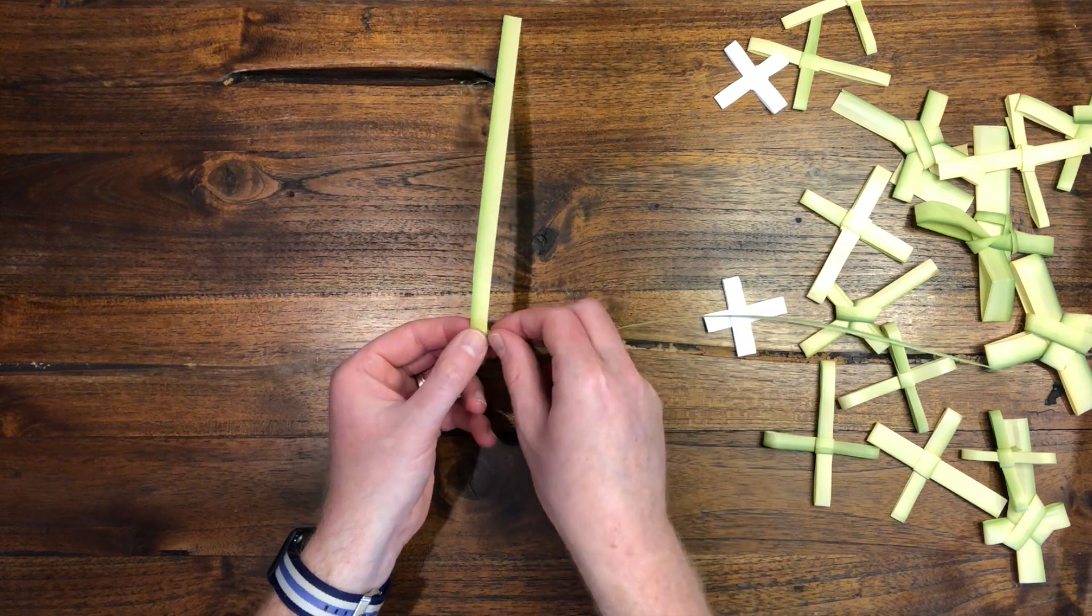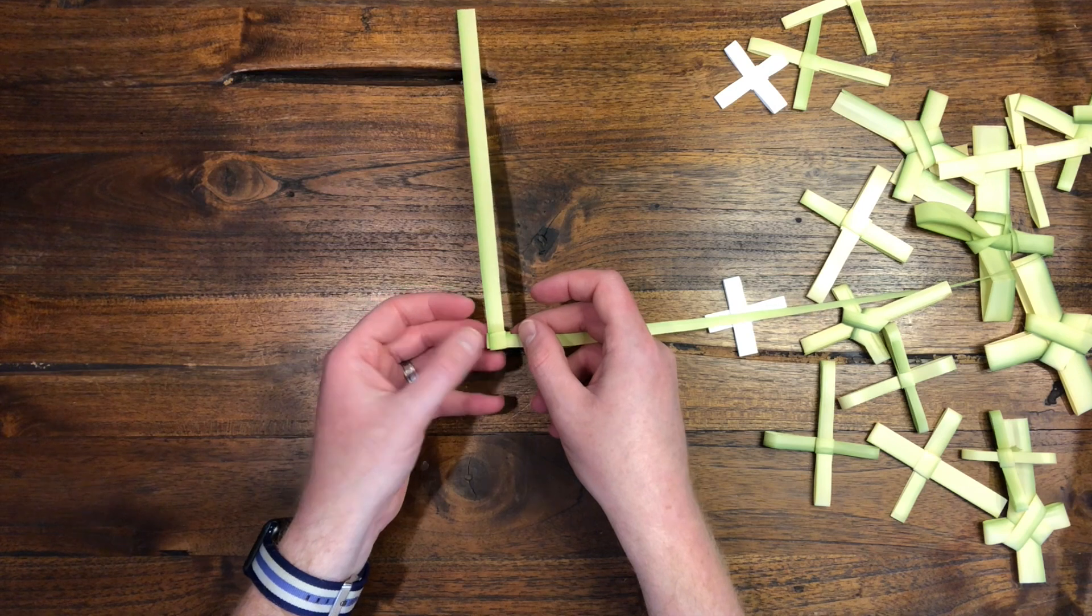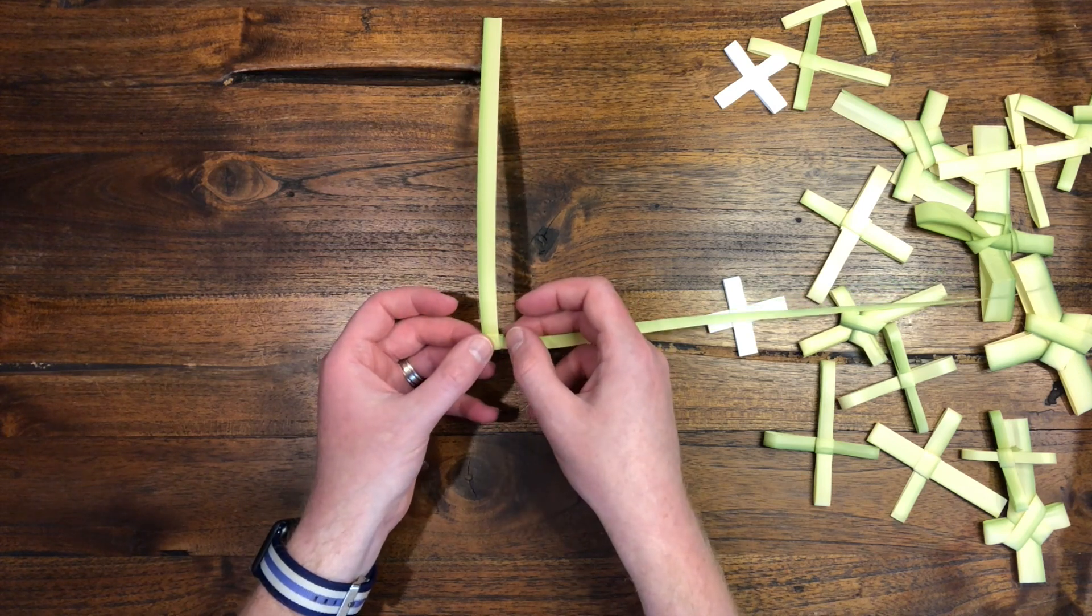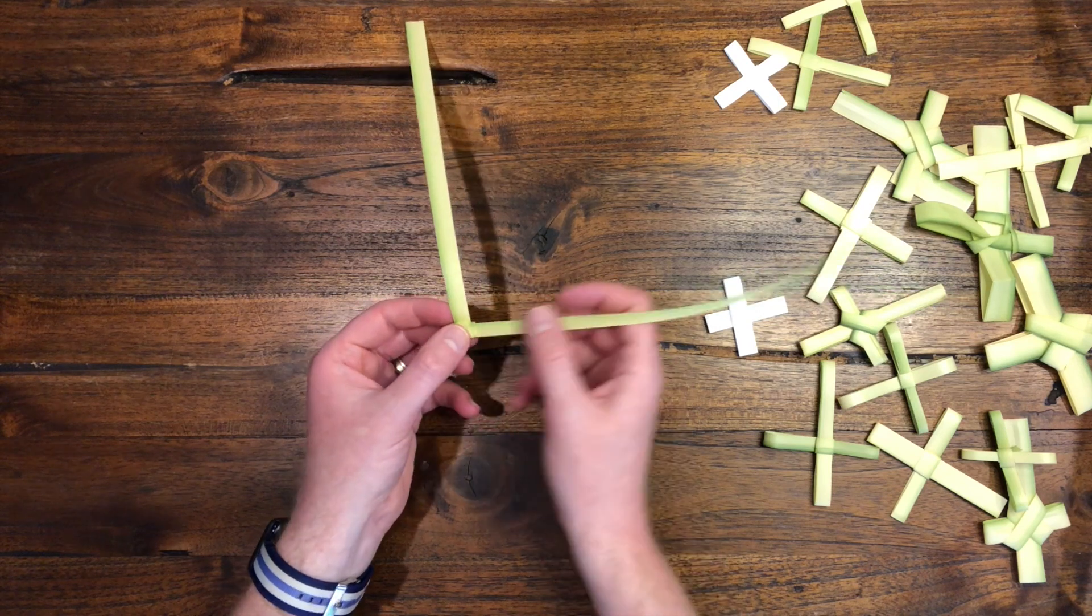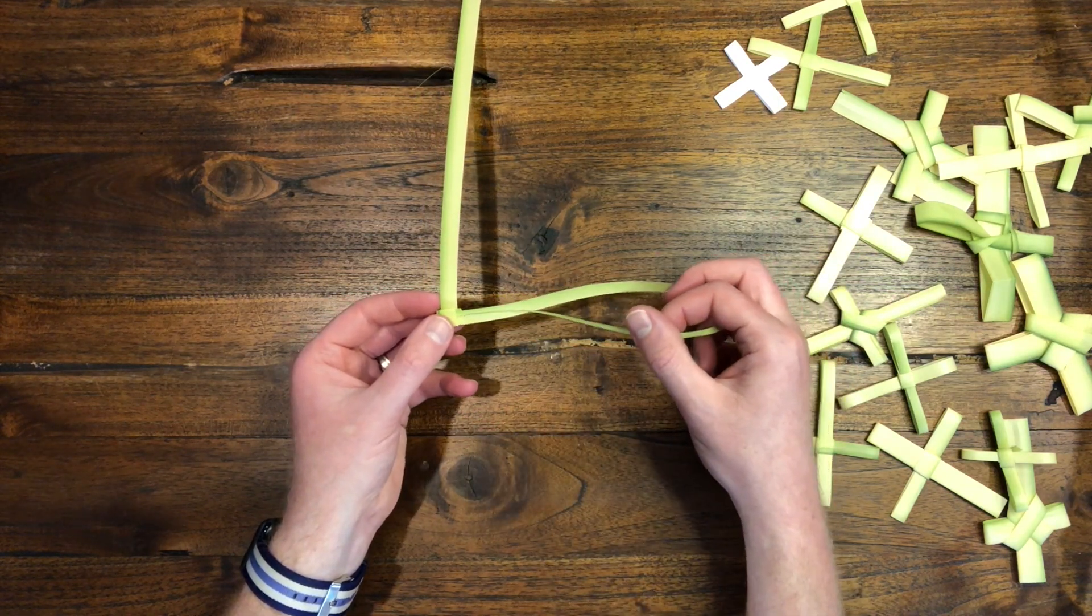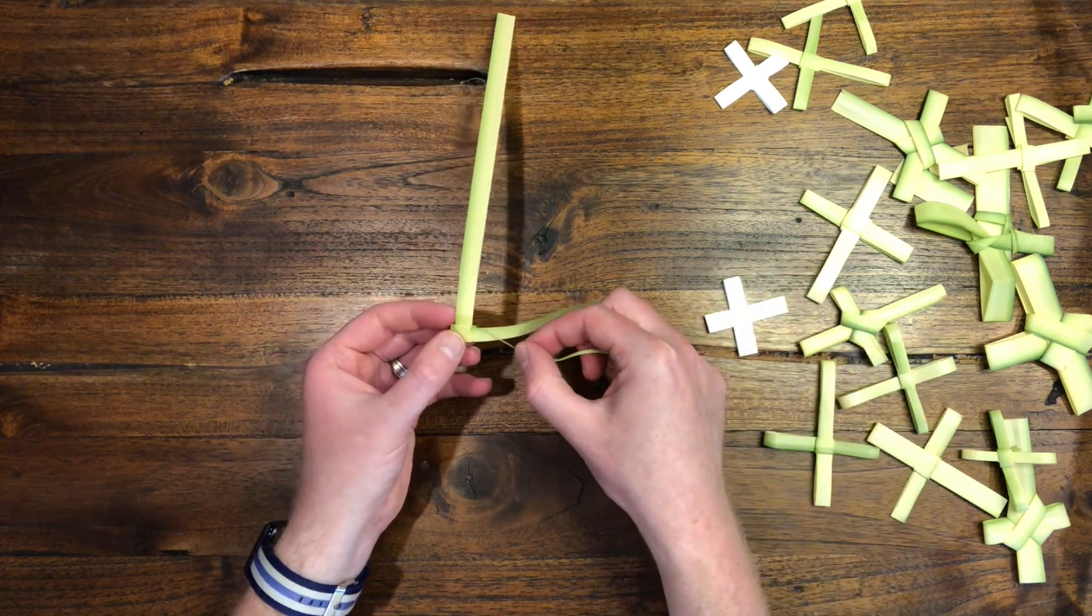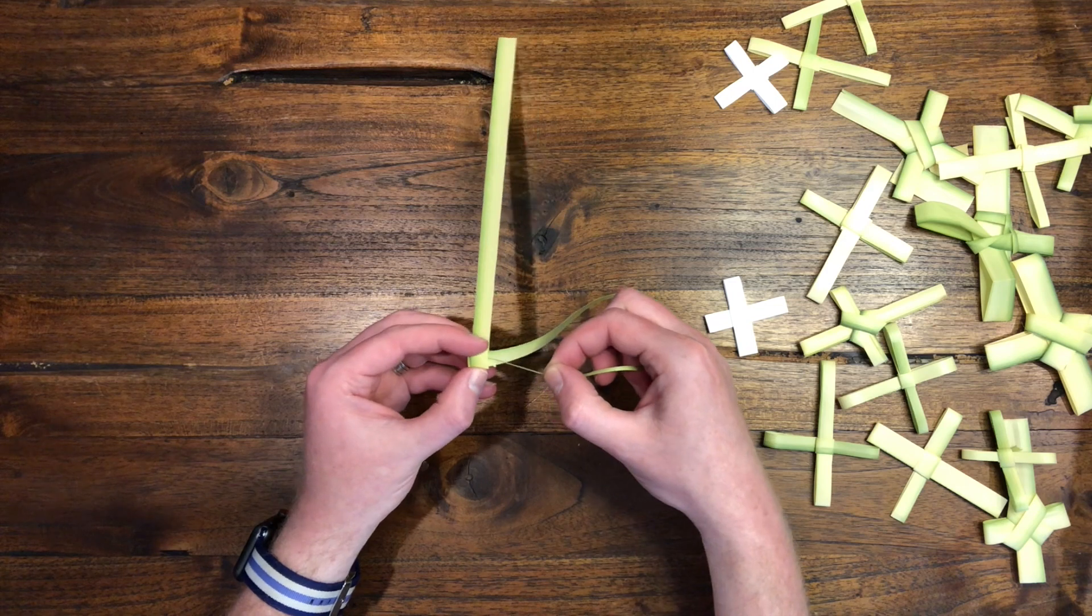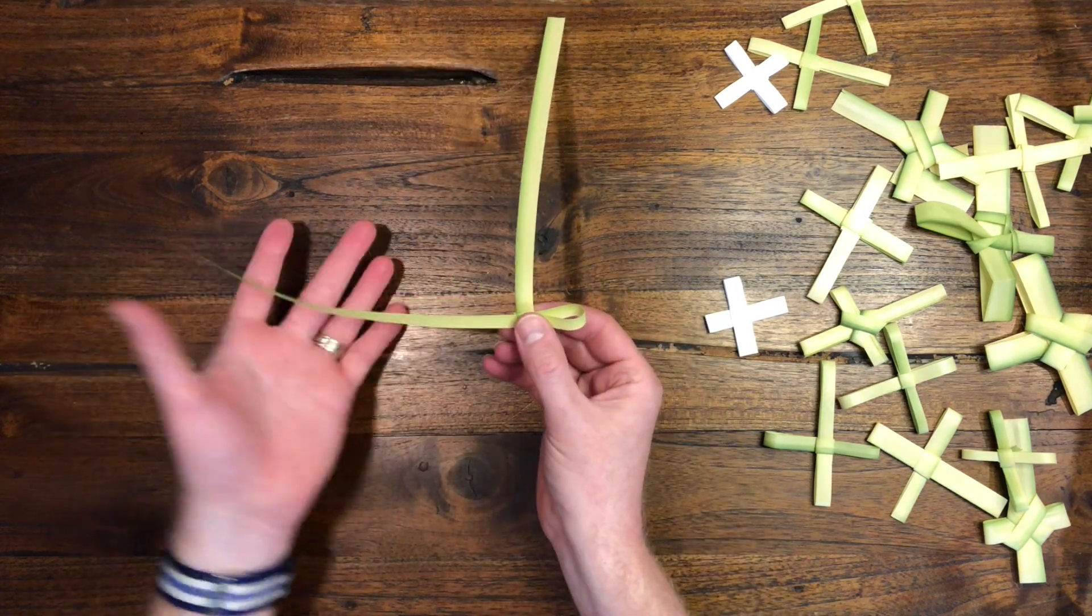And what you have done now is you've created a knot. And that's the most important part of the whole cross. Once you've got your knot, you will take the skinny side, slide it back through the knot, creating the arm of your cross, the first arm. And I suggest it be a little smaller than you think.